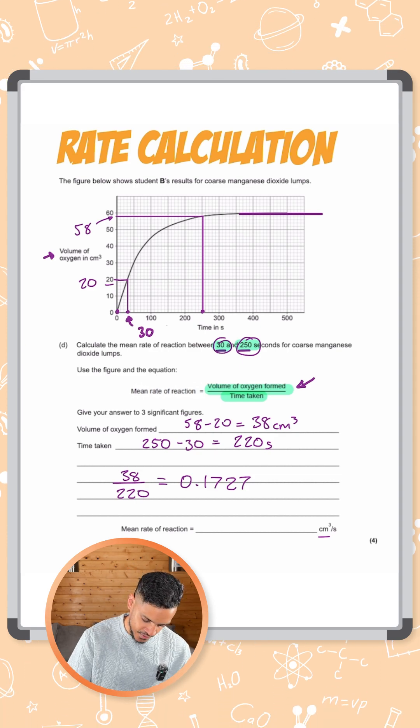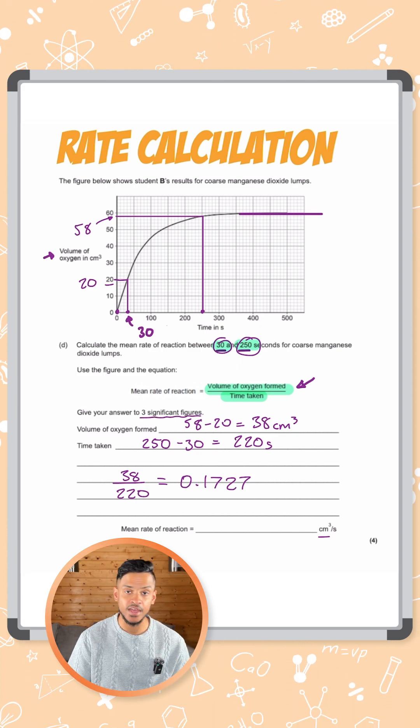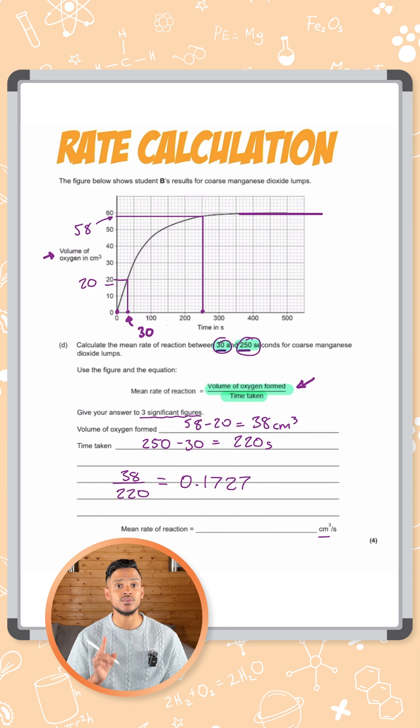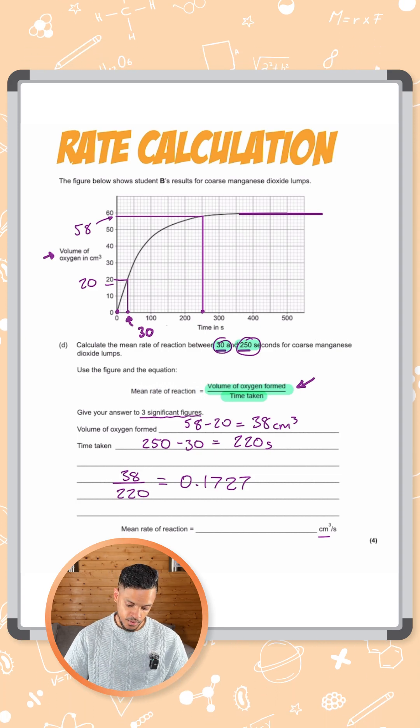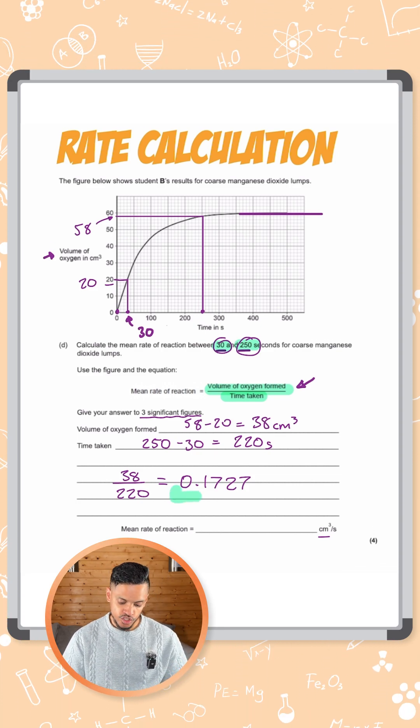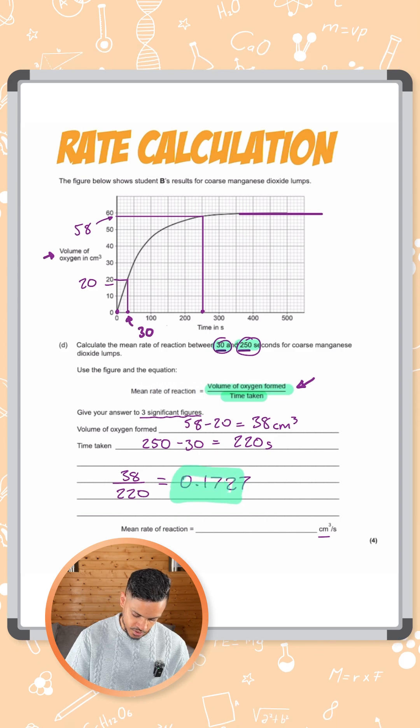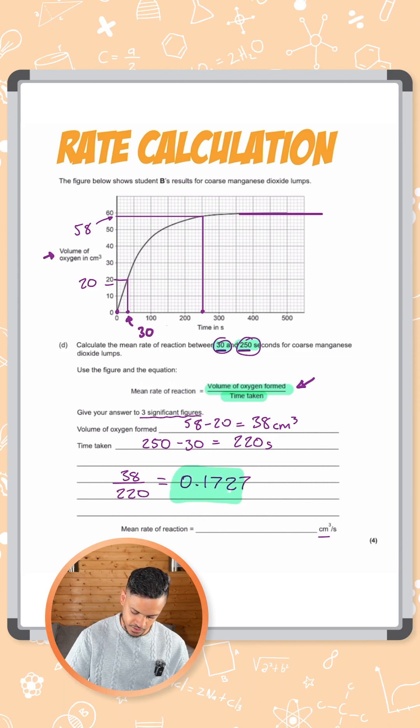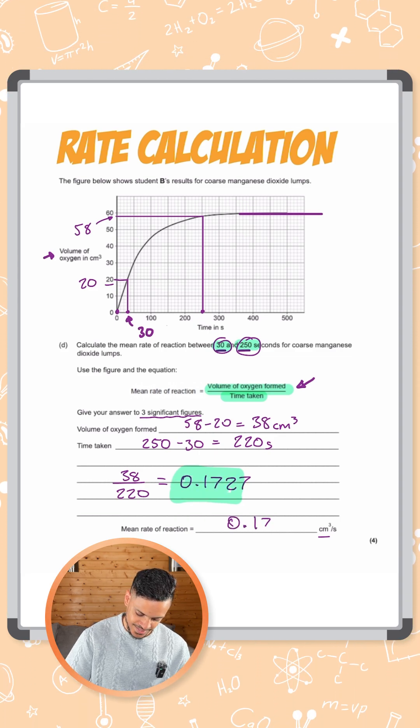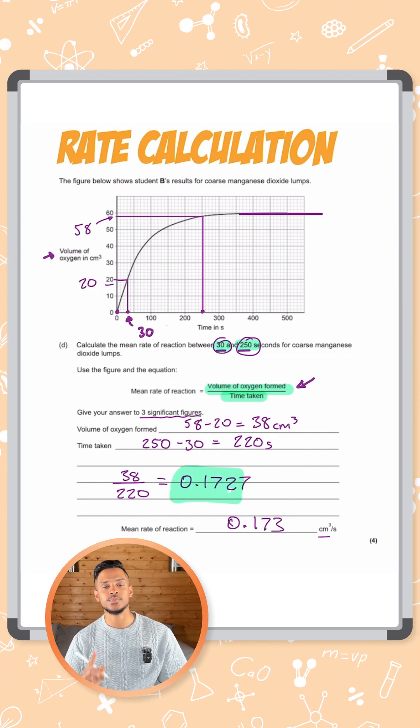Now the question clearly says give your answer to three significant figures. If it ever tells you that it means you get an extra mark for doing that. So let's do that. It's 0.1727. We only want the first three significant figures here. So that's going to be 0.173 centimeters cubed per second.